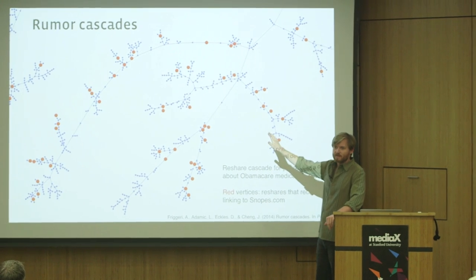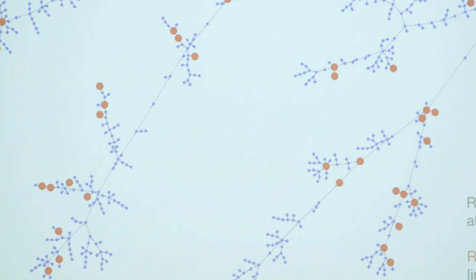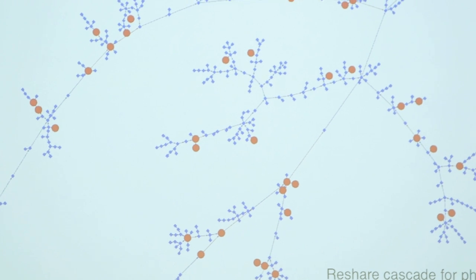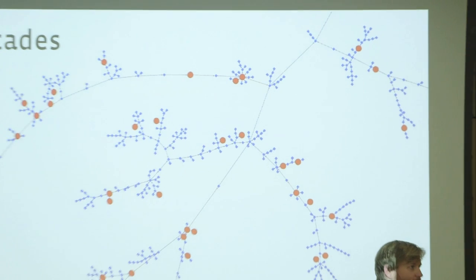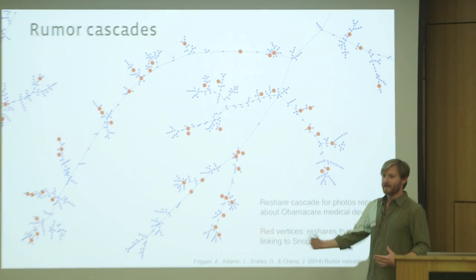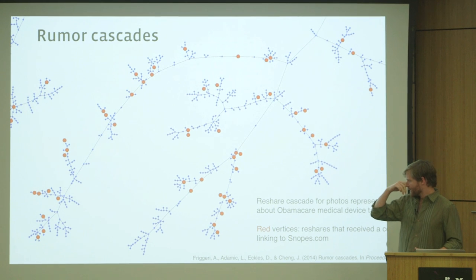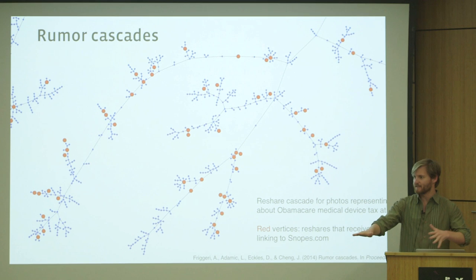This is a cascade of a photo being reshared on Facebook. Somebody uploaded a public photo to Facebook, and this particular photo represents a rumor that Obamacare has this medical device tax—that's true—and that Cabela's was showing this medical device tax on a bunch of people's receipts. The meme was that Obamacare says it's supposed to be a hidden tax from consumers, but Cabela's is showing us the tax, like this substantial tax on everything Cabela's is selling.